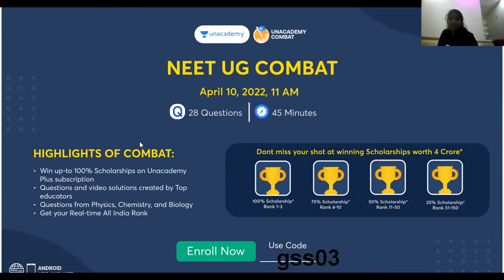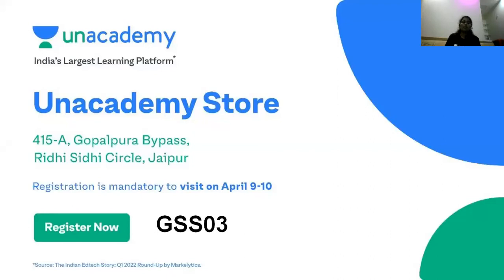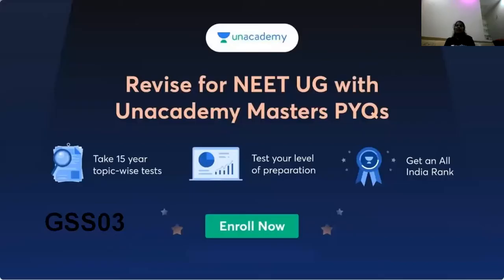Real-time All India rank is displayed on the website. Also, the Unacademy store is launching — store visit registration is mandatory. Visit the store in Jaipur. Registration requires the invitation code GSS03. Don't forget. Unacademy also has a separate section for previous question papers.